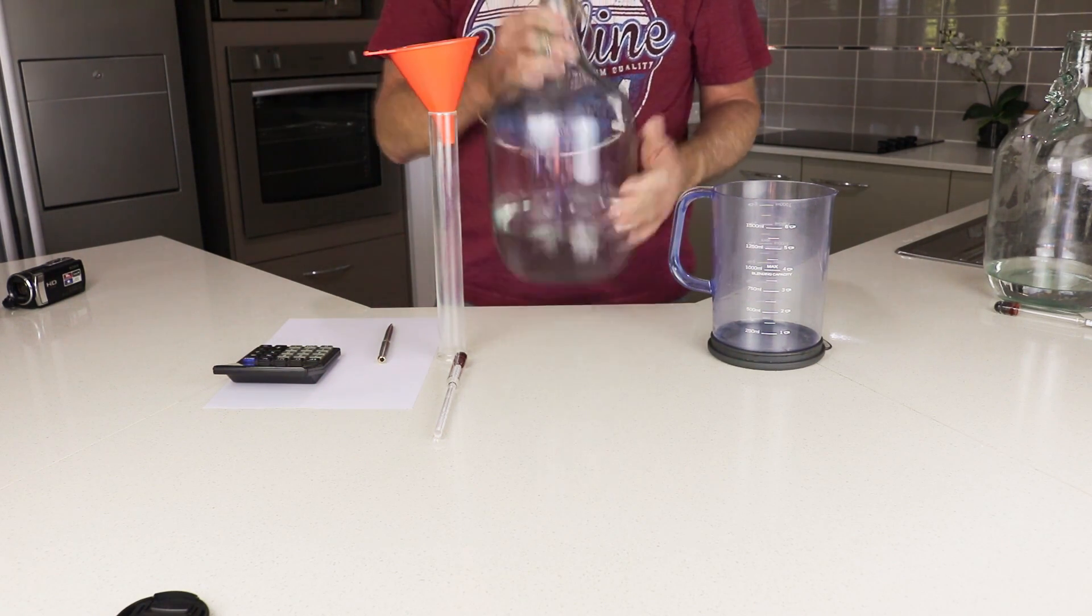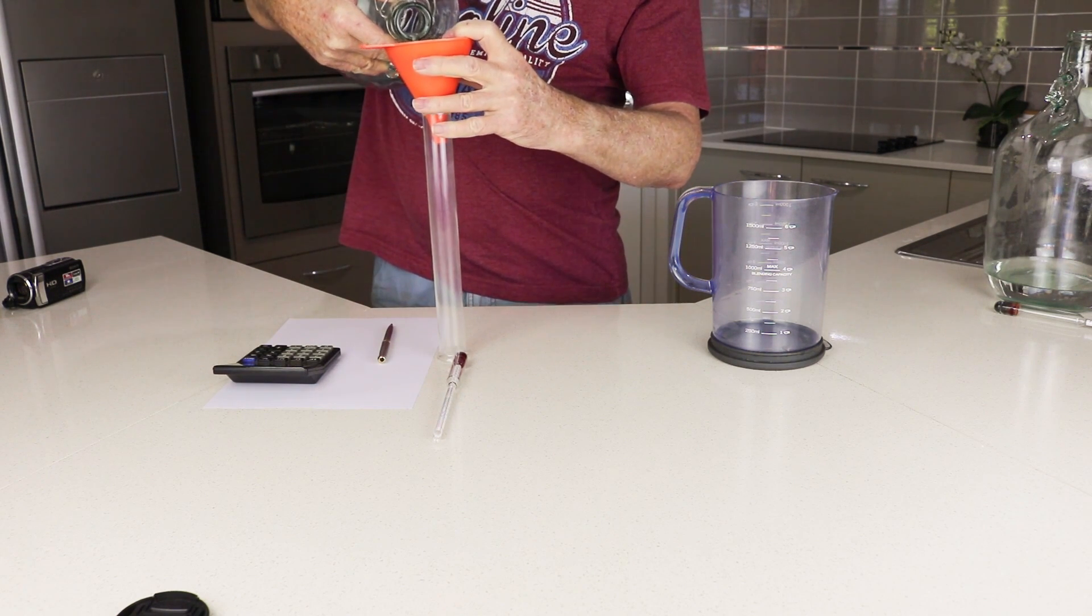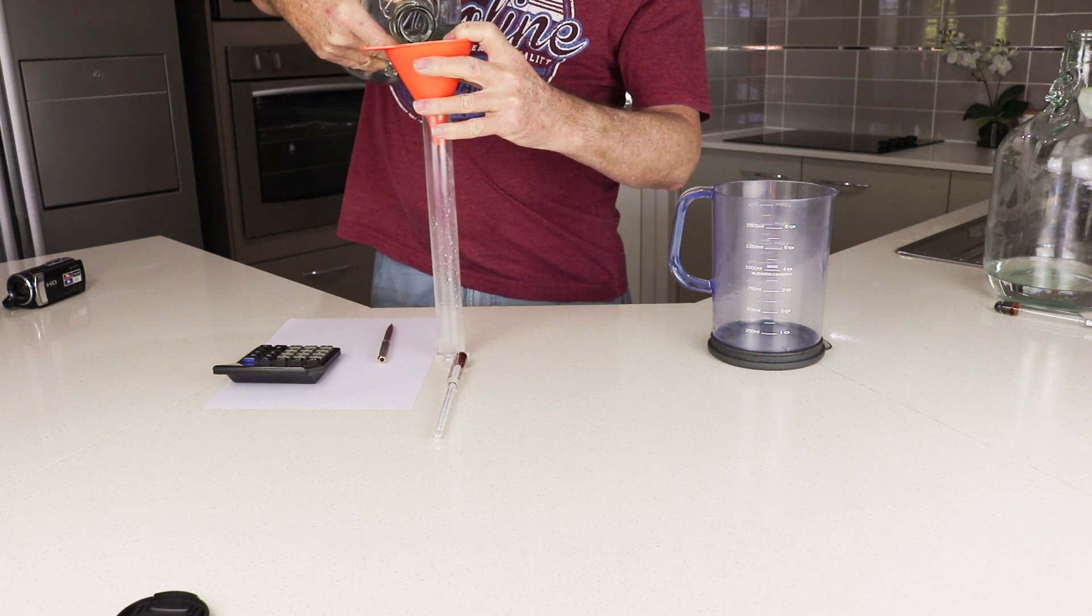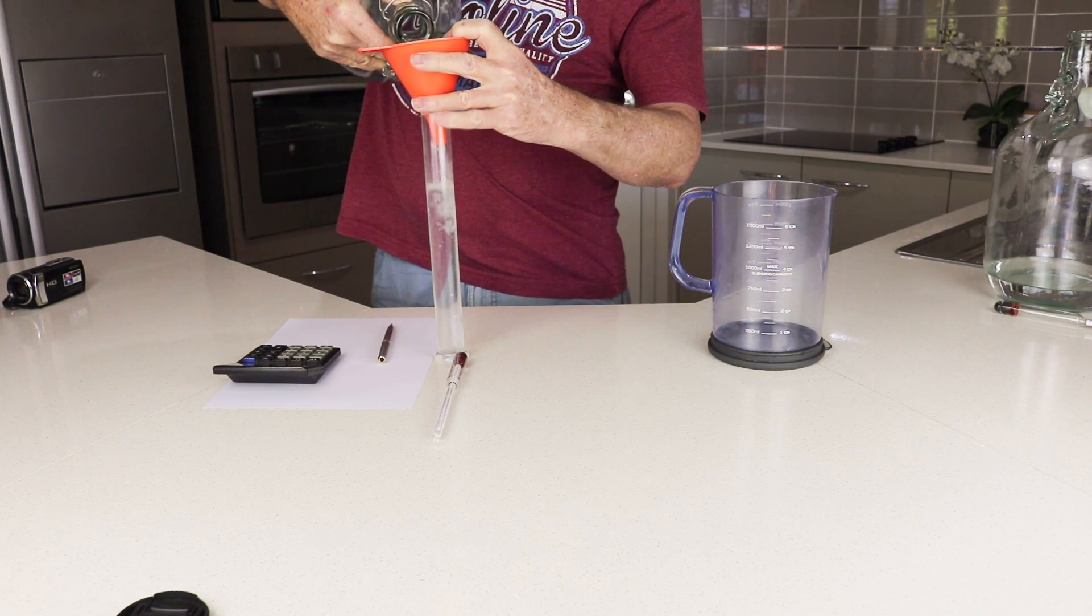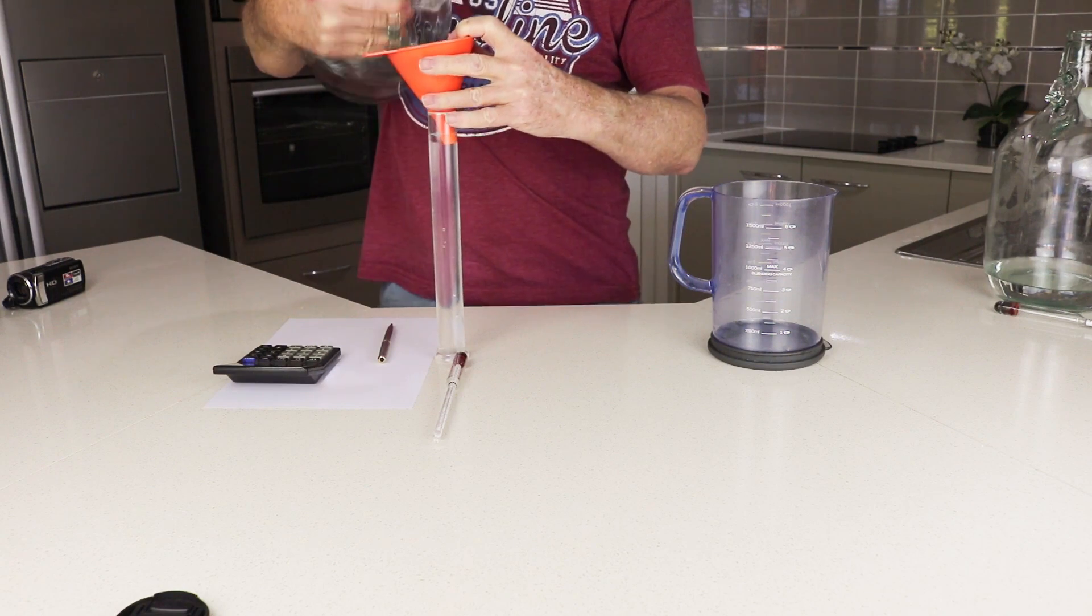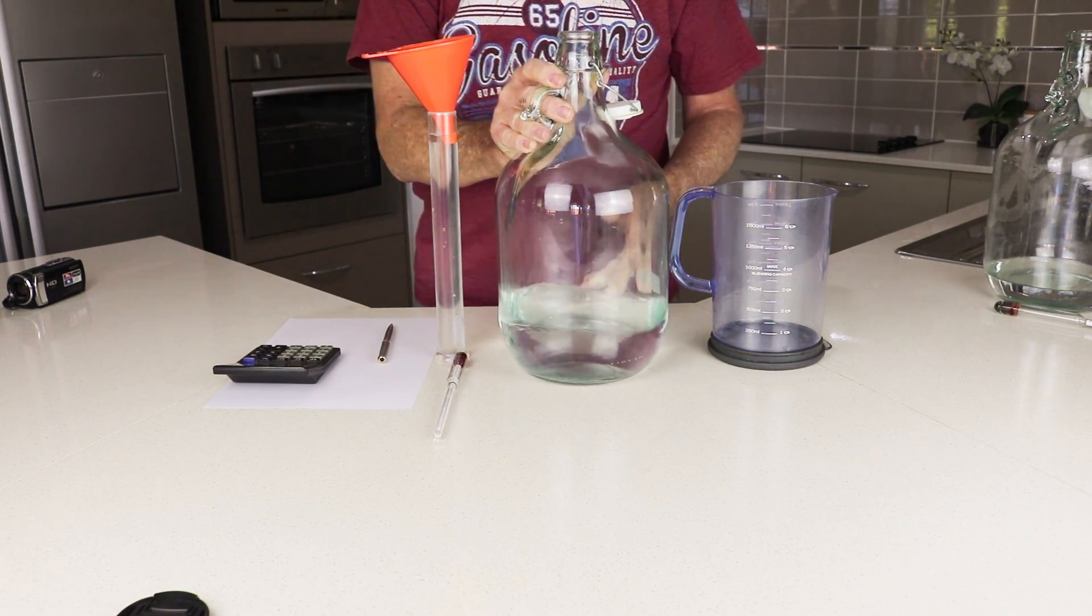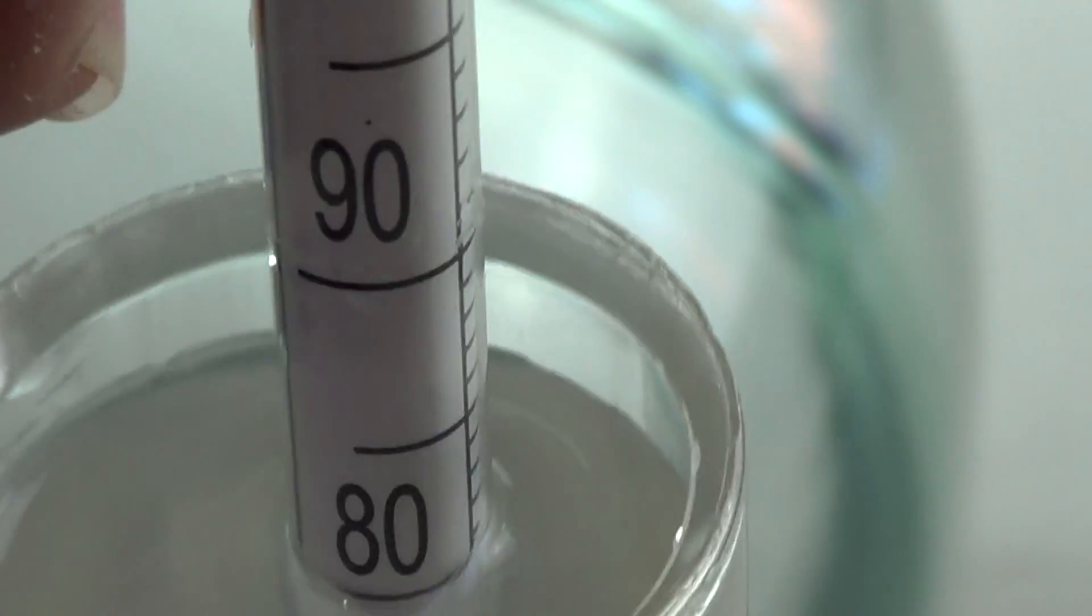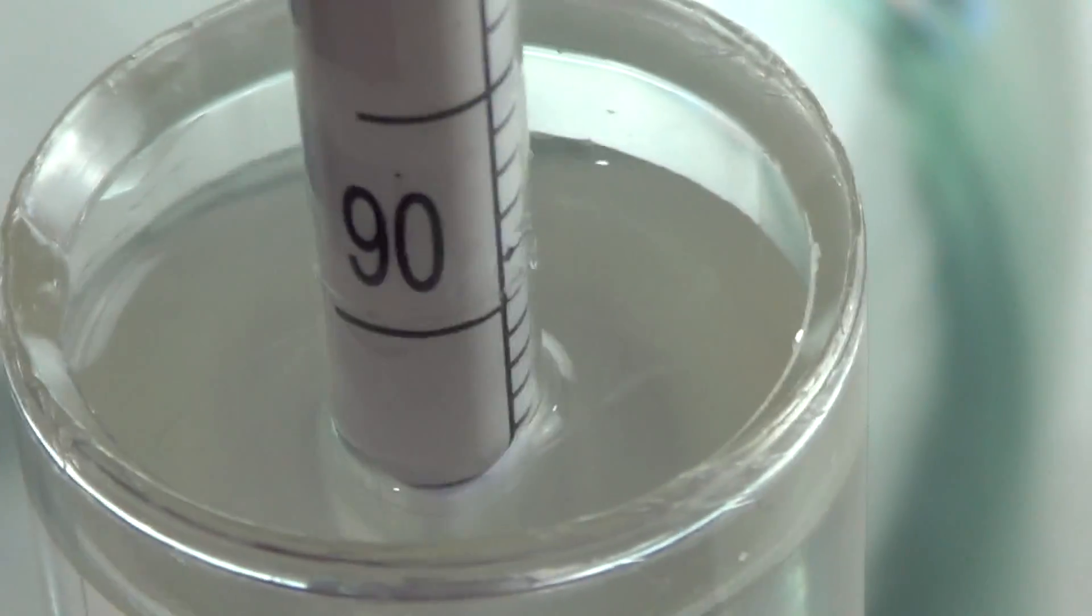We have to pour a sample of the distillate into this container where we're going to use our alcohol meter to see exactly what the alcohol by volume level is. Drop the alcohol meter into it and as you can see here, it comes to 85% alcohol by volume.